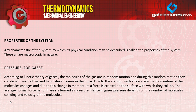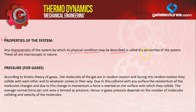First of all, the definition of properties of system. What is properties of system? Any characteristics of the system by which its physical condition may be described is called the properties of the system. These all are macroscopic in nature.